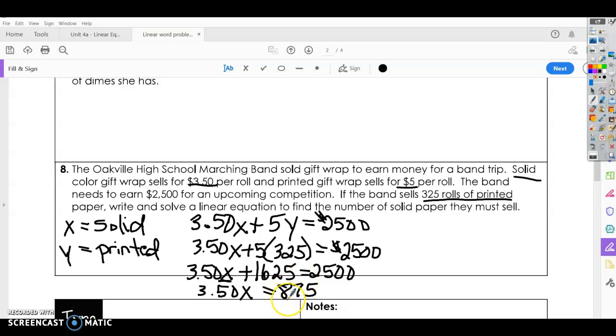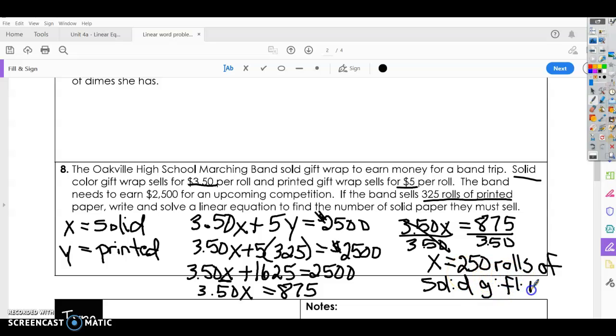We have to get that from the solid gift wrap. Alright, so $3.50 per solid gift wrap equals $875. Divide by $3.50 per pack, and that will give us how many packs, or how many rolls we need. $875 divided by $3.50. 250 rolls of solid gift wrap. Alright, so 250 rolls of solid gift wrap plus the 325 rolls of printed gift wrap will give us the $2,500 we need to go to the band competition.